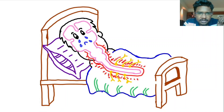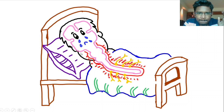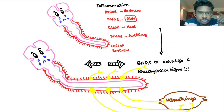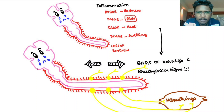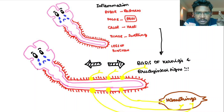See here, this is the inflamed meninges. Let us track back to our basic pathology. In any inflammation, there will be Rubor, Dolor, Calor, Tumor, and Loss of Function.